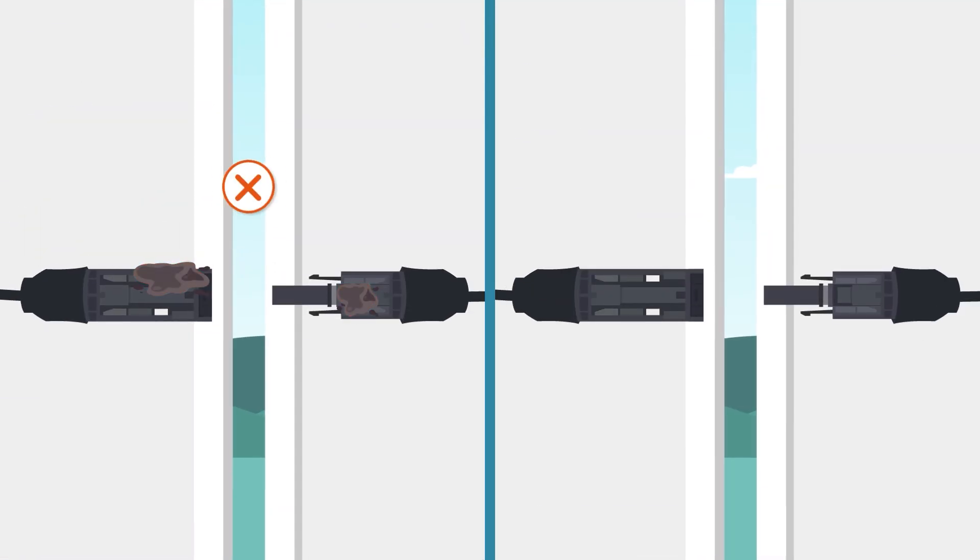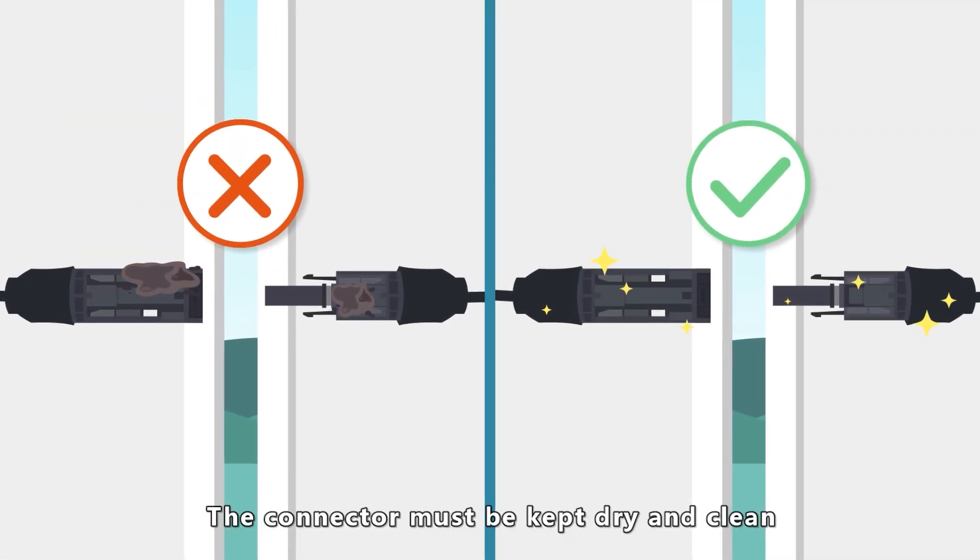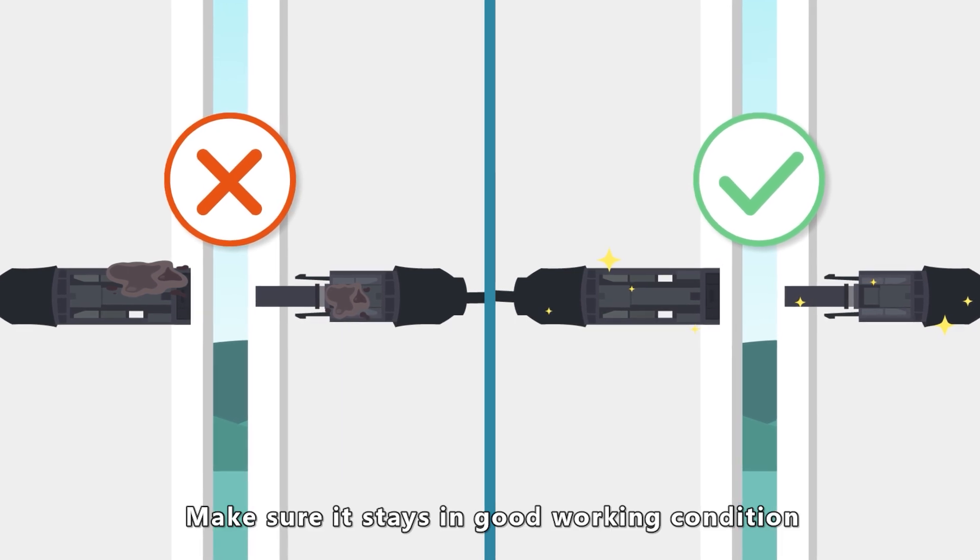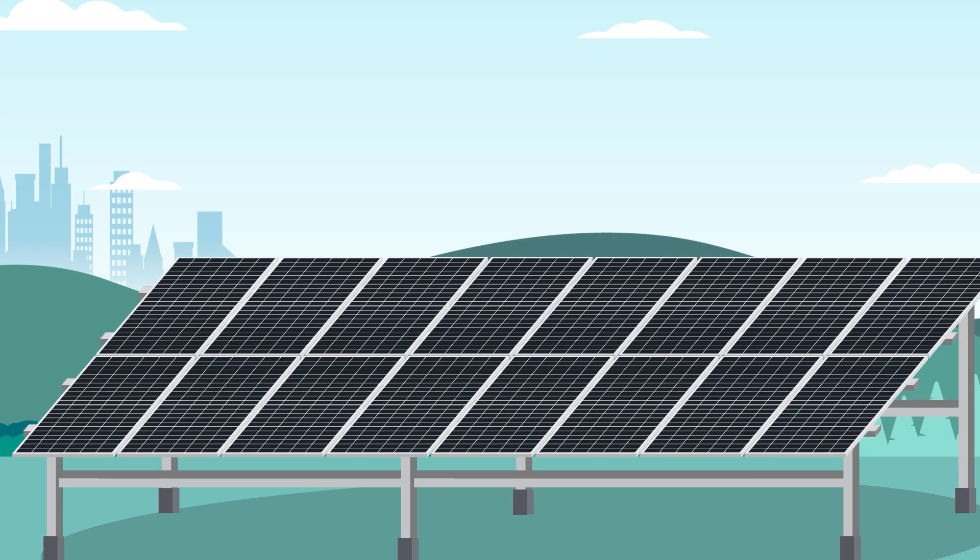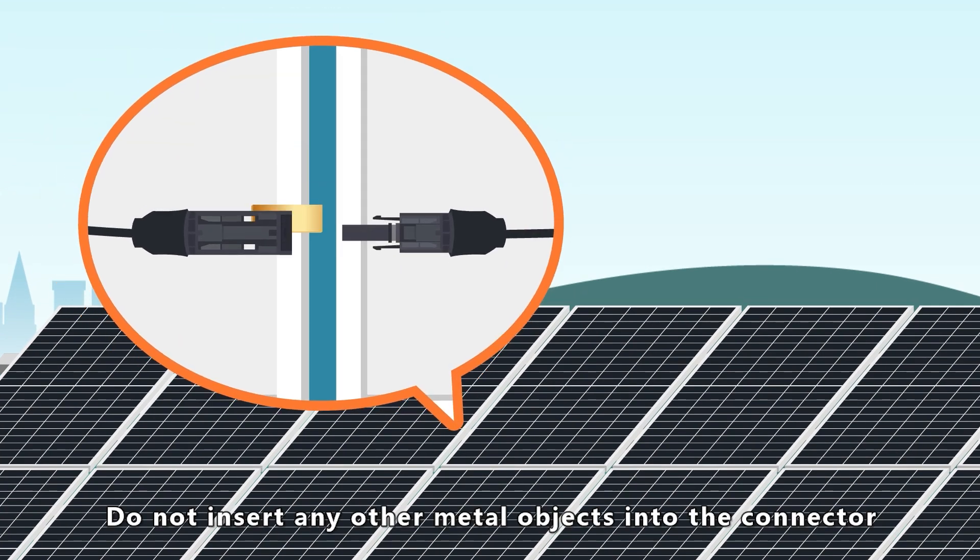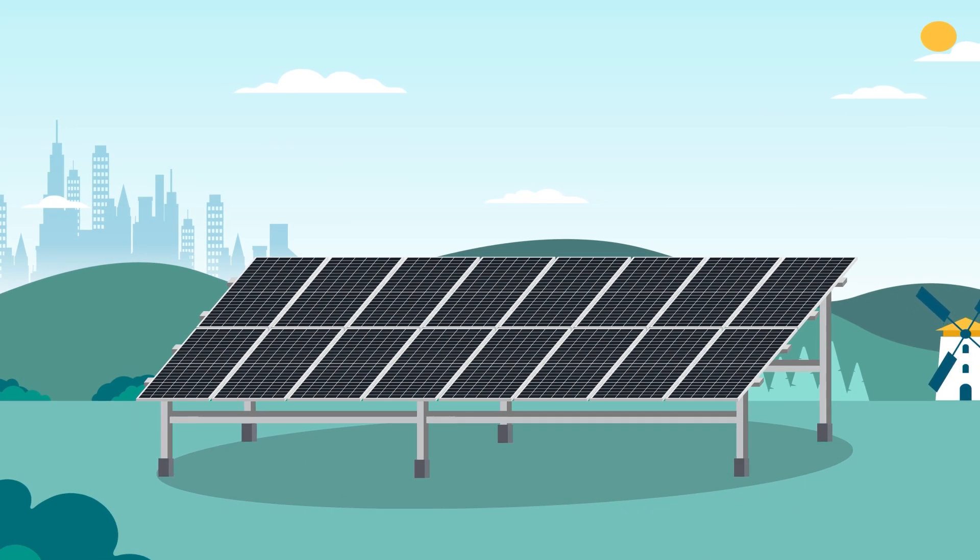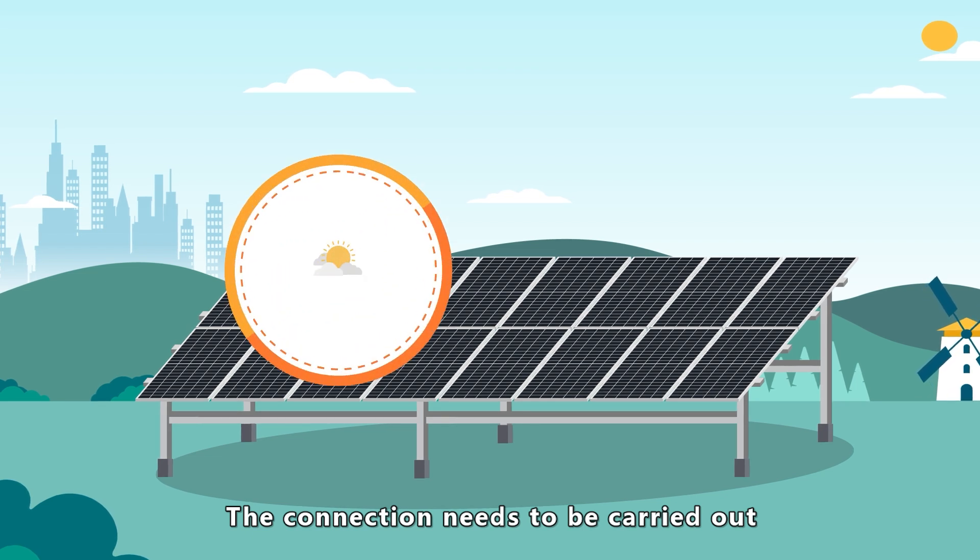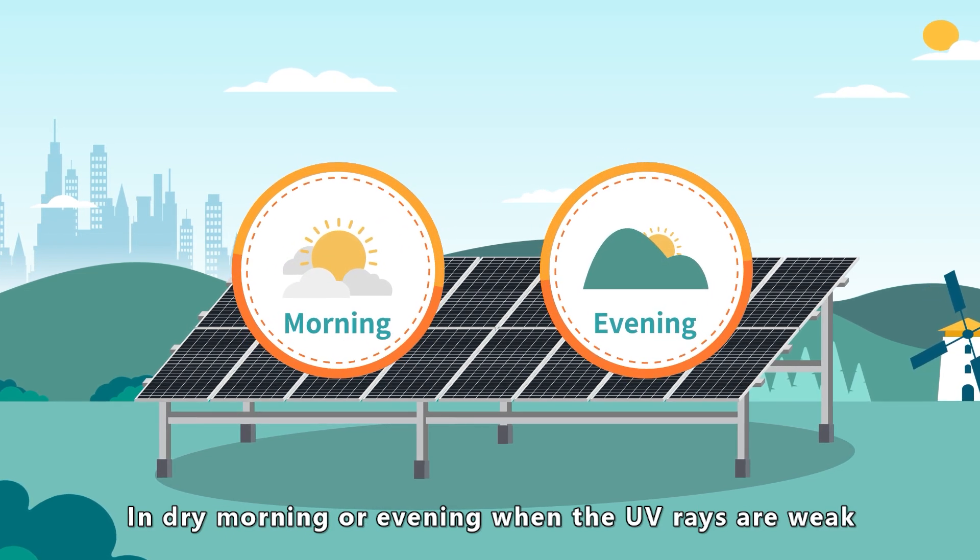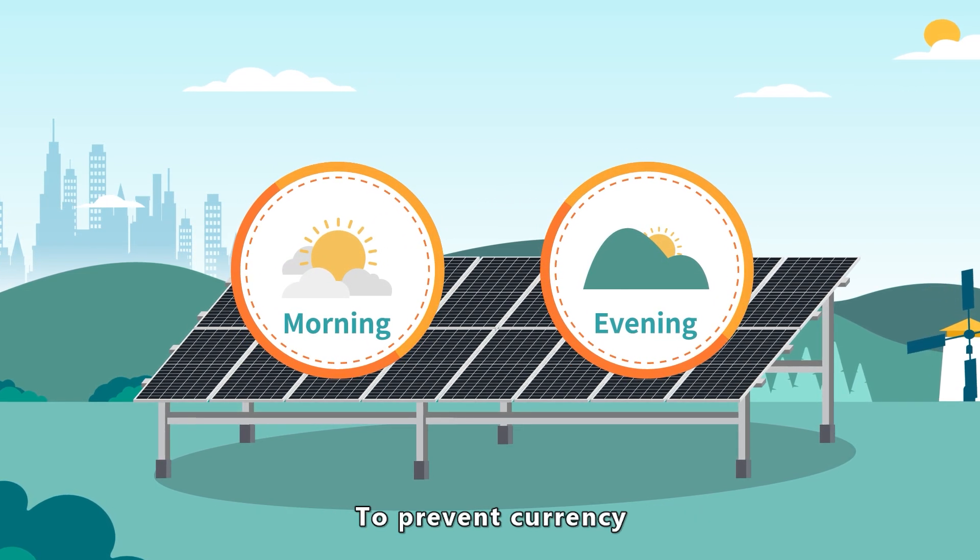During the installation, the connector must be kept dry and clean. Make sure it stays in good working condition. Do not insert any other metal objects into the connector or operate the electrical connection by any other means. The connection needs to be carried out in dry morning or evening when the UV rays are weak to prevent current issues.